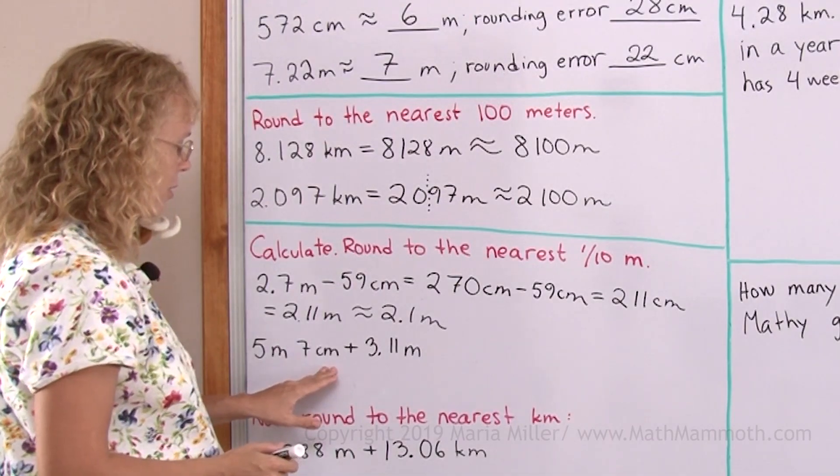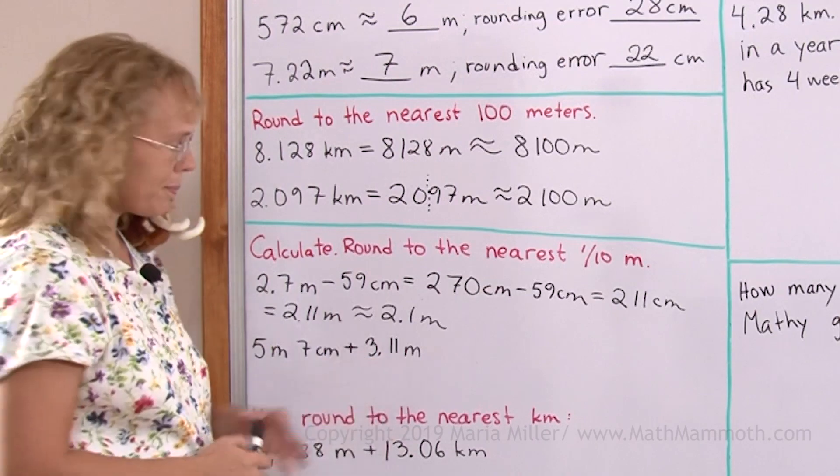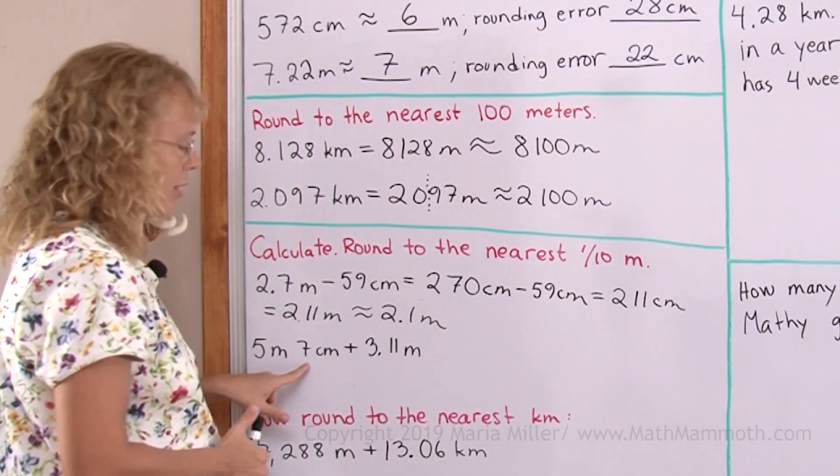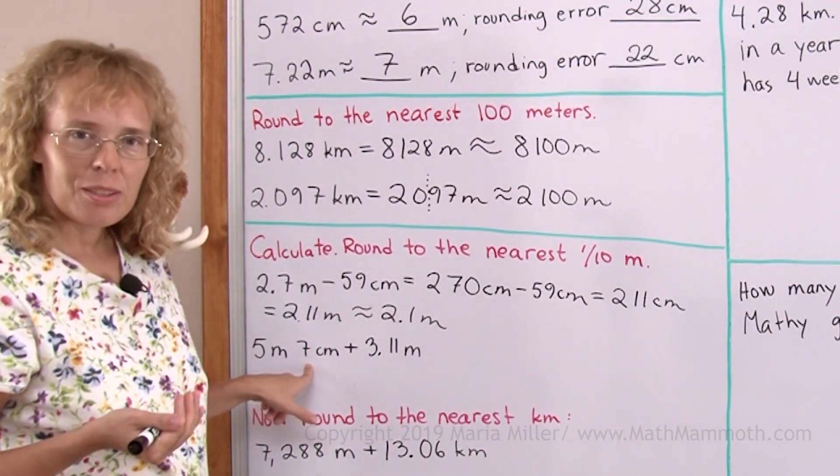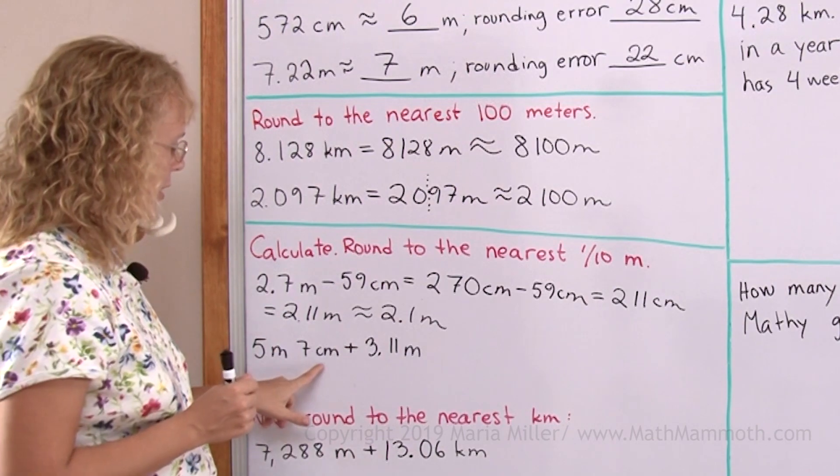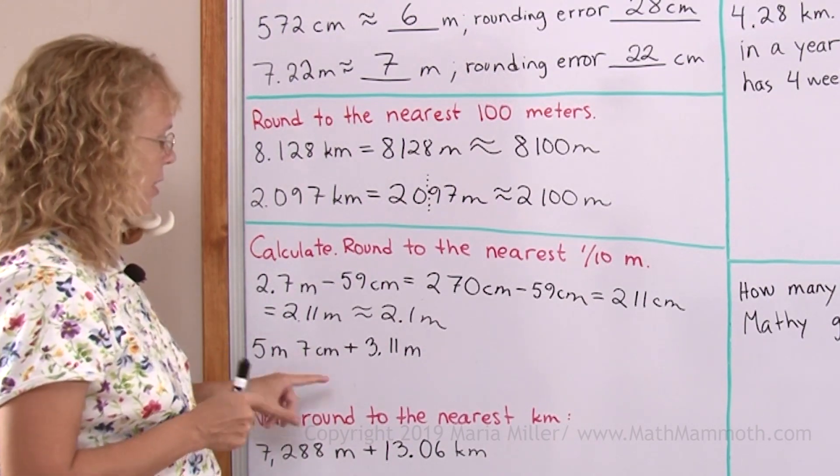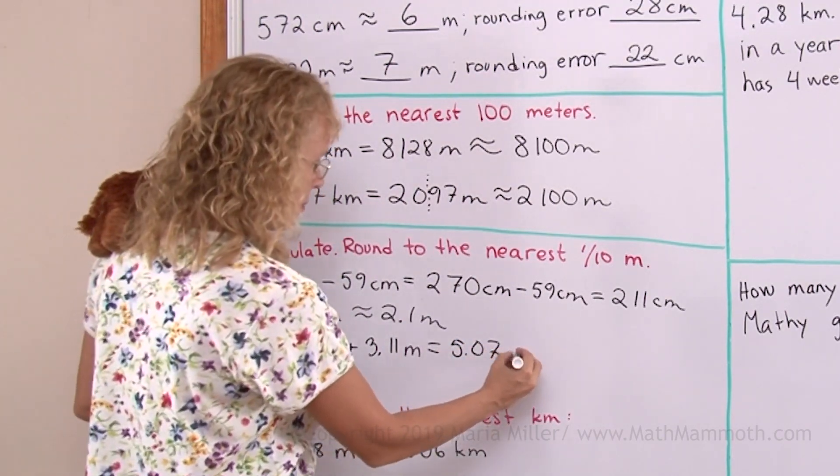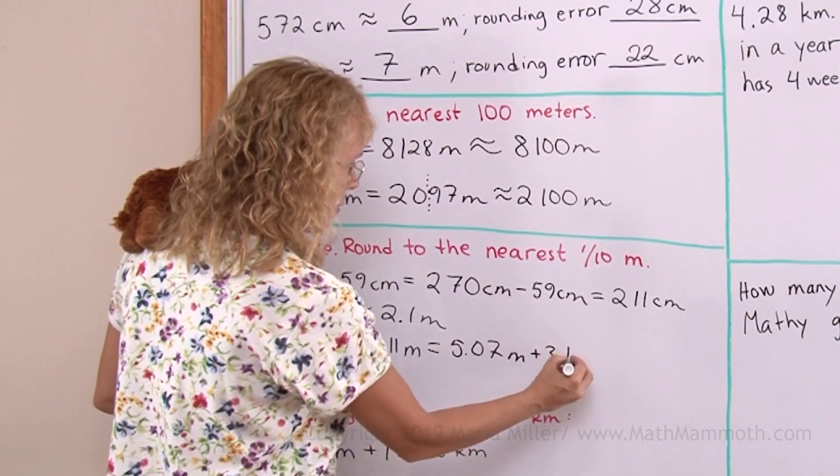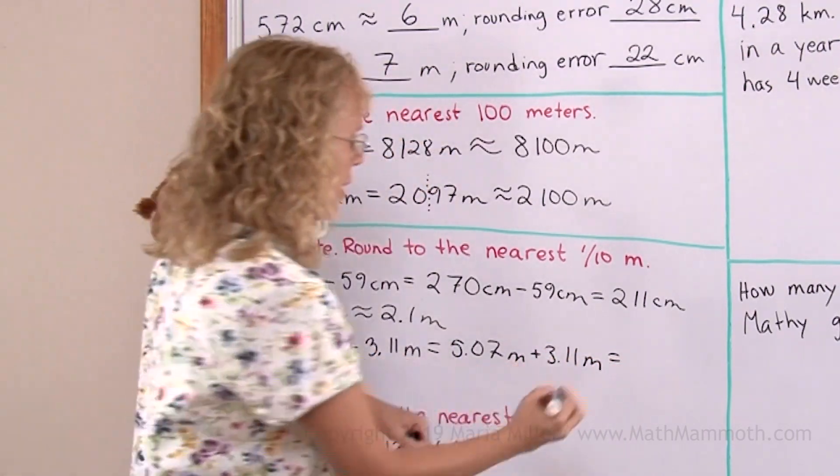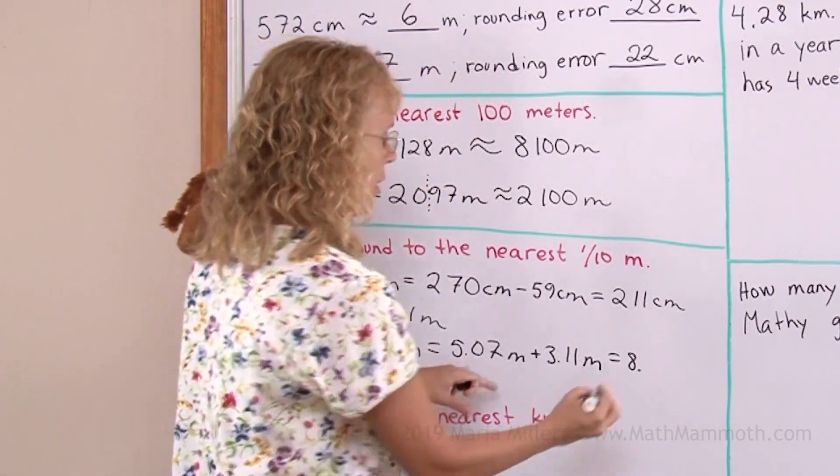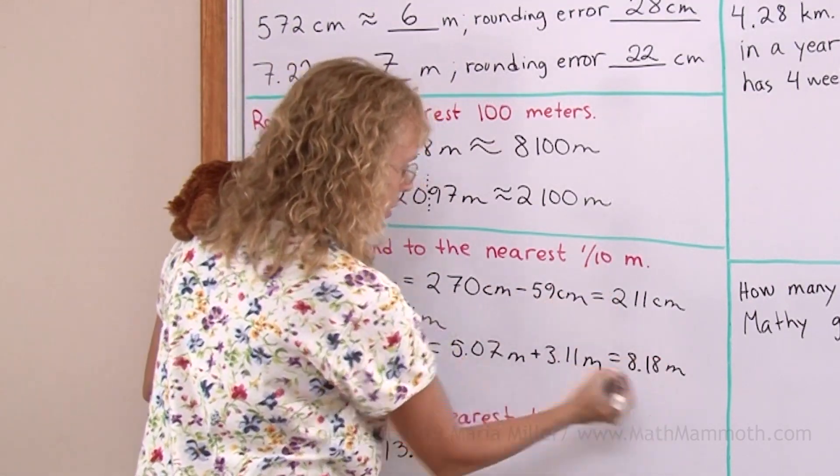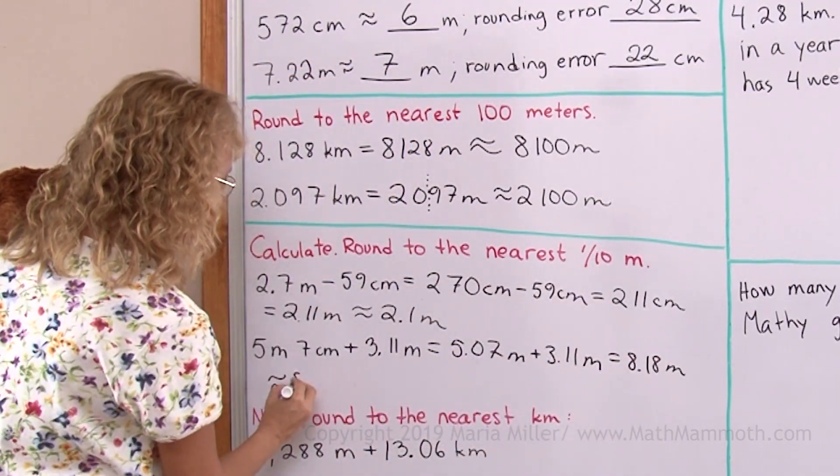5 meters, 7 centimeters plus 3.11 meters. Let me change this here to meters. Remember 7 centimeters, centi meaning hundredths. So this is 7 hundredths of a meter, 5 and 7 hundredths of a meter. As a decimal like this, 7 hundredths of a meter. And the other one that we need to add. This is pretty easy to add. We get 8, and then point, and then we have 18 hundredths of a meter. And now round it to the nearest tenth over here. So we should get 8.2 meters.